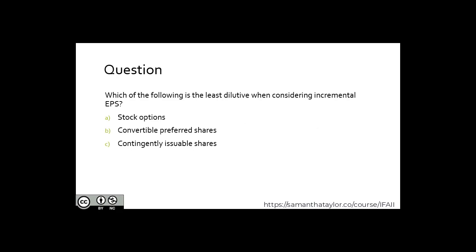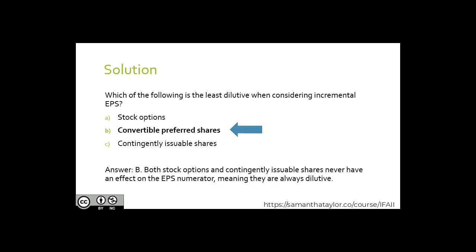A question: which of the following is the least dilutive when considering incremental EPS? A) stock options, B) convertible preferred shares, or C) contingently issuable shares? The answer is B, convertible preferred shares. Both stock options and contingently issuable shares are always dilutive because they impact the denominator but not the numerator. With convertible preferred shares, however, there is a numerator impact — that is why they are always the least dilutive among these three. Thank you so much. This concludes this chapter, and I'll see you in the next.